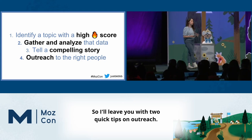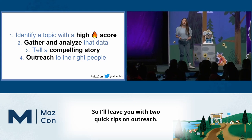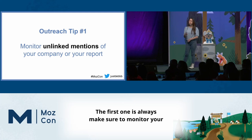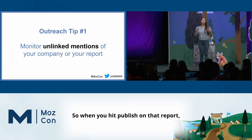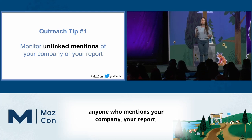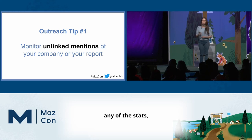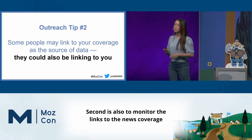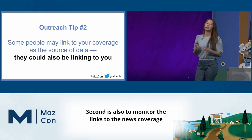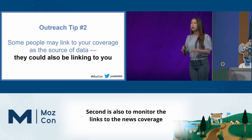I'll leave you with two quick tips on outreach. The first one is to always make sure to monitor your unlinked mentions if you aren't already doing so. When you hit publish on that report, anyone who mentions your company, your report, or any of the stats — those are opportunities for you to get links easily.